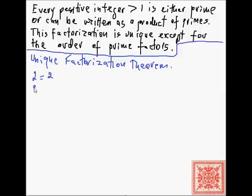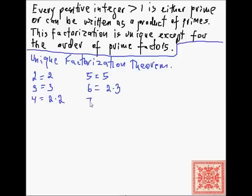Here's an example. 2 is 2, 3 is 3 — those are primes, they have themselves as prime factorizations. 4 is 2 times 2. 5 is 5, that's a prime number. 6 is 2 times 3. 7 is 7.